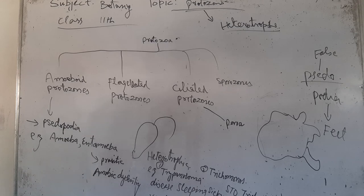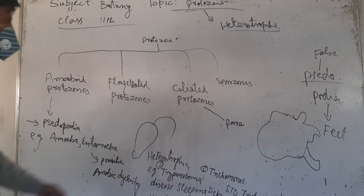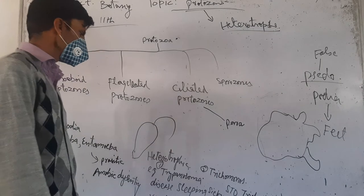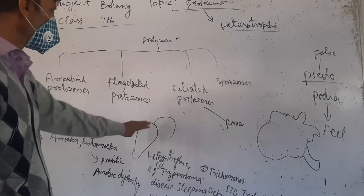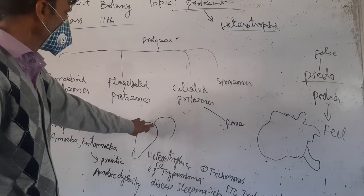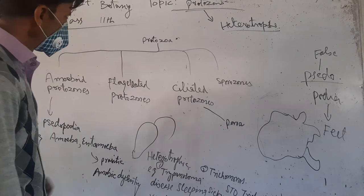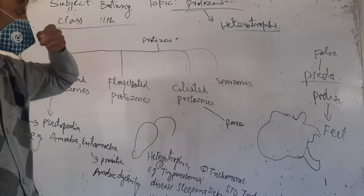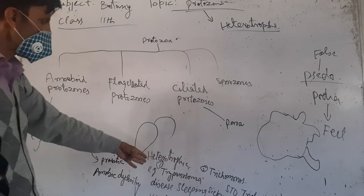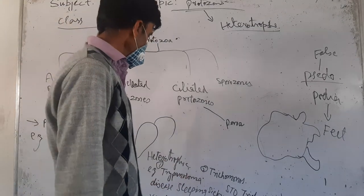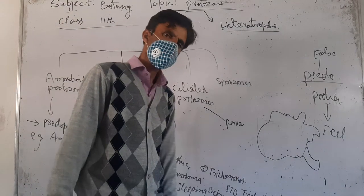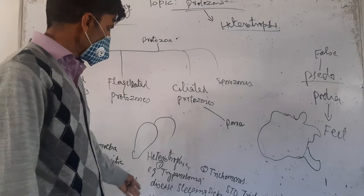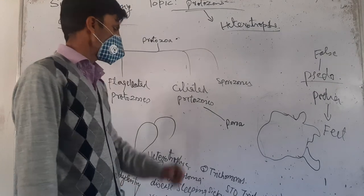The second is flagellated protozoans. These are flagellated protozoans which have a flagellum. An example is Trypanosoma.